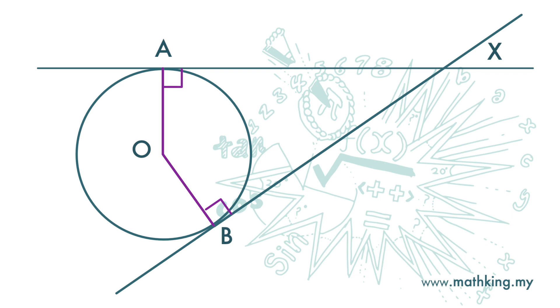We have just learnt that a tangent to a circle makes a 90 degree angle with the radius of a circle. AX and BX are also equal in length.